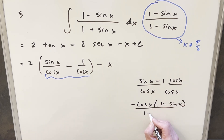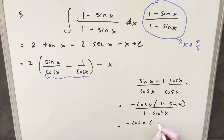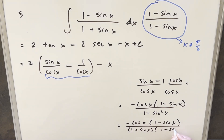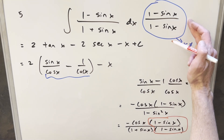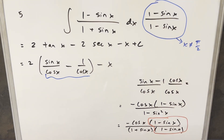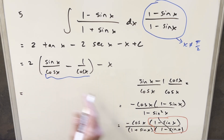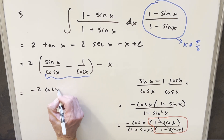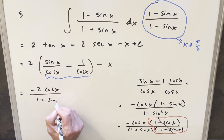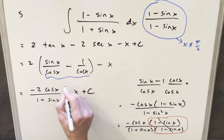After multiplying, I'll rearrange the numerator to be minus(1 minus sine x), and in the denominator I have cosine squared x, which I rewrite as 1 minus sine squared x. That factors as (1 plus sine x)(1 minus sine x). The (1 minus sine x) cancels, eliminating the problem at π/2. Plugging back in and distributing the 2, the final answer is minus 2 cosine x over (1 plus sine x) minus x plus C.